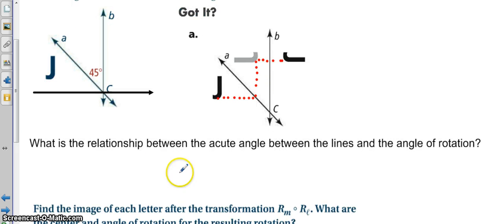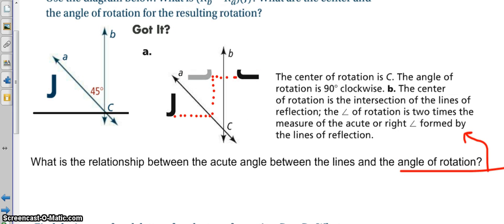So now, what do you think the relationship between the acute angle between the lines and the angle of rotation happens to be? So, I actually have this answer for you right up here. So, because the center of rotation is C, the angle of rotation ends up being 90 degrees, because we went over the 45, which turned my shape 90 degrees, and then my final reflection did not rotate, it just flipped it.